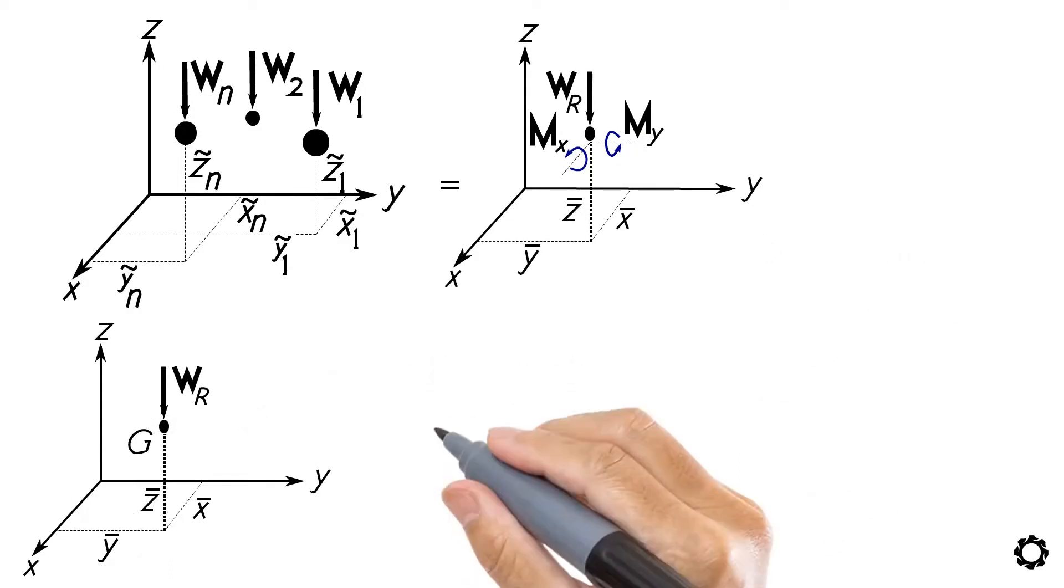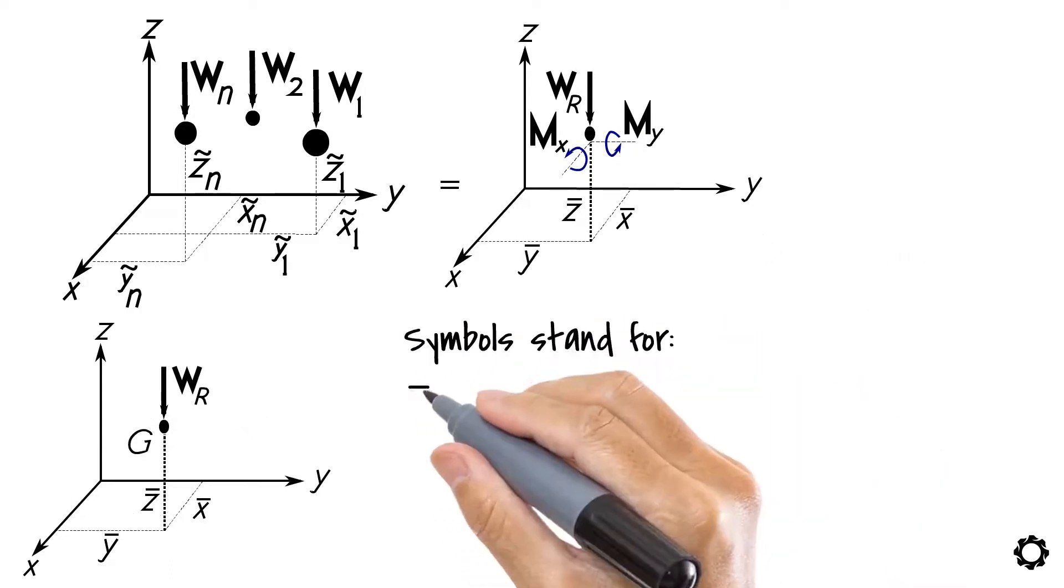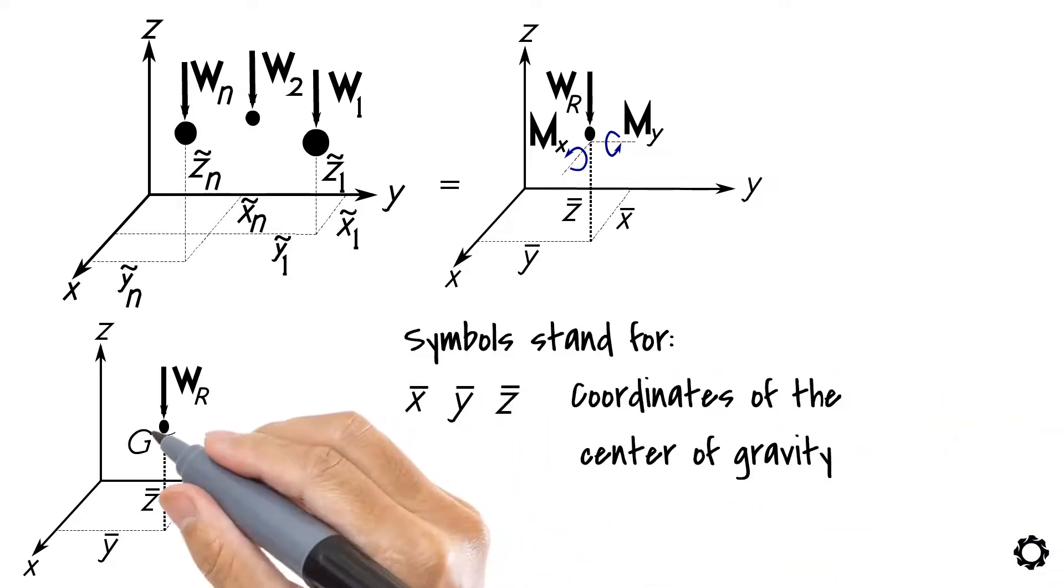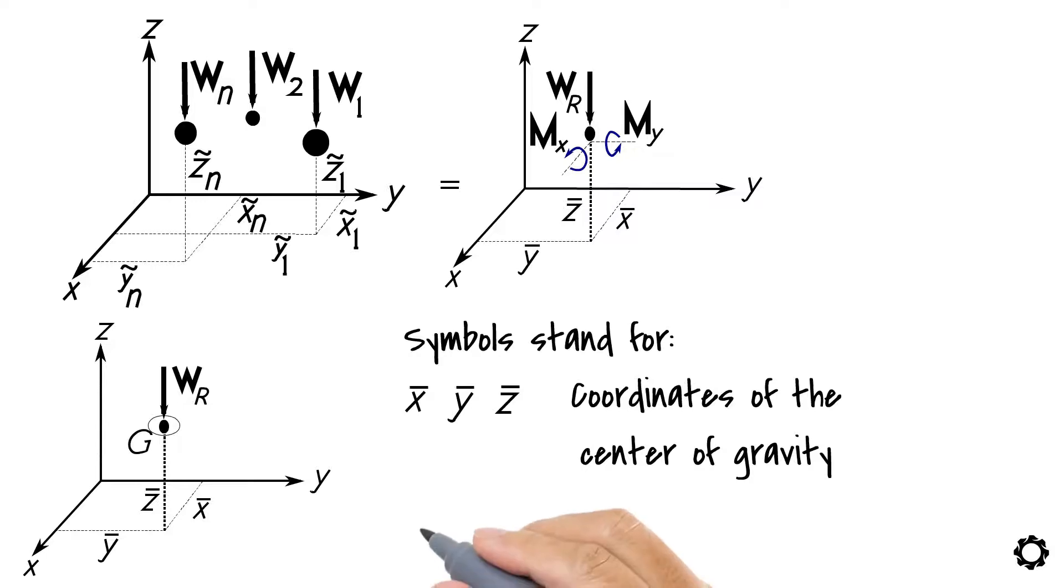Let's go through what these symbols stand for. x-bar, y-bar, and z-bar are the coordinates of the center of gravity G of the system of particles. Then, x tilde, y tilde, and z tilde are the coordinates of each particle in the system.